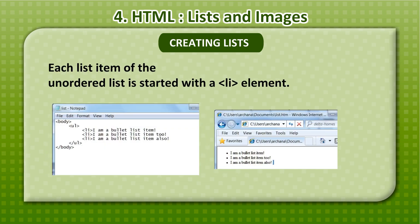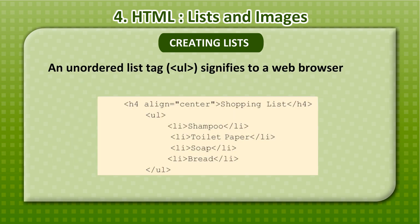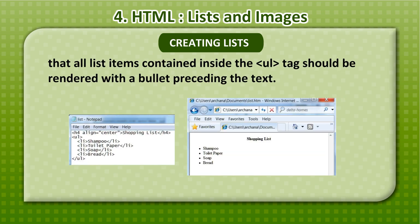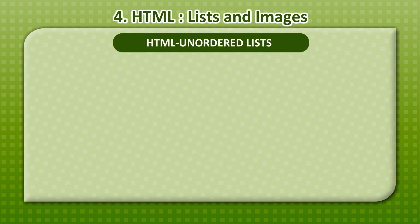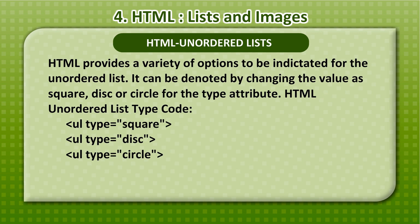The tag used for an unordered list is UL. Each list item of the unordered list is started with an LI element. The UL tag signifies to a web browser that all list items contained inside the UL tag should be rendered with a bullet preceding the text. HTML provides a variety of options for the unordered list.